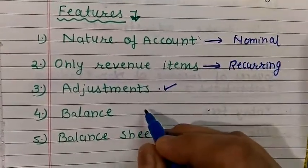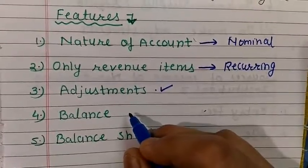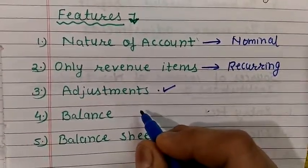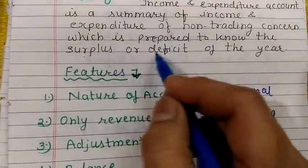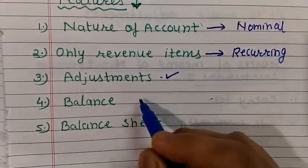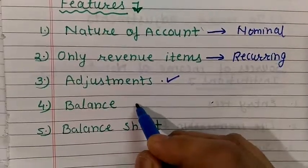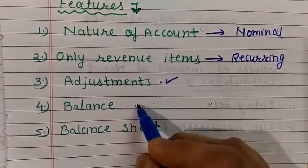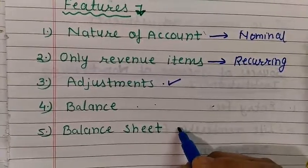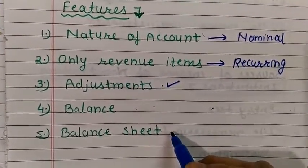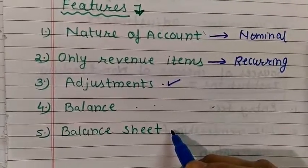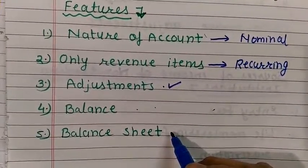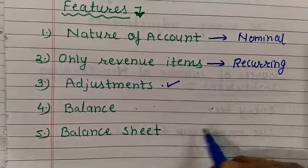Then balance: the balance of this account refers to the difference of the debit and credit side. The balance is called surplus or deficit. If the debit side is excess, it means expenditure is excess, it is called deficit. If the credit side, meaning income side, is excess, it is called surplus. After this account, the balance sheet is also prepared, which is a necessary part of the final account, and it shows information about the exact financial position of the institution.